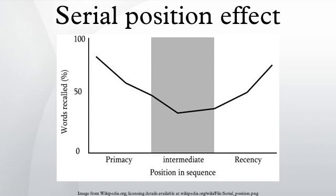Amnesiacs with poor ability to form permanent long-term memories do not show a primacy effect, but do show a recency effect if recall comes immediately after study. People with Alzheimer's disease exhibit a reduced primacy effect, but do not produce a recency effect in recall.